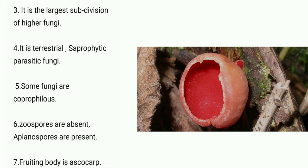Some fungi are also coprophilous, meaning they grow on animal dung. Zoospores are absent and aplanospores are present. Zoospores are motile, while aplanospores are non-motile spores. The fruiting body is called the ascocarp.